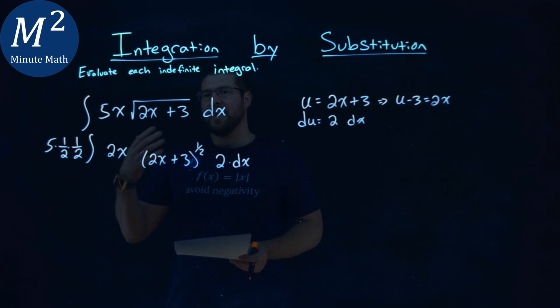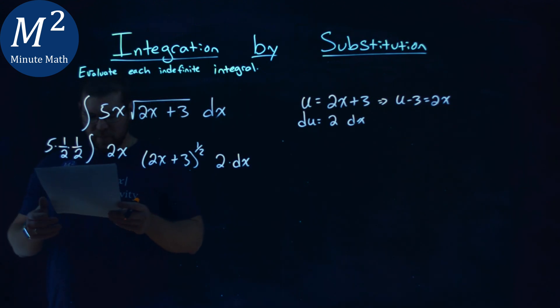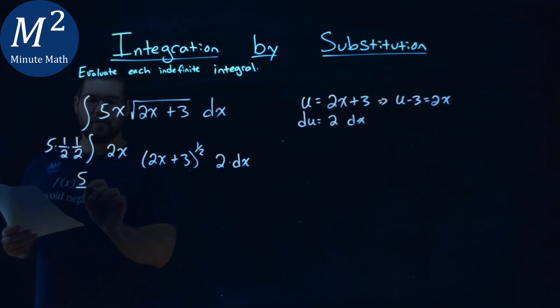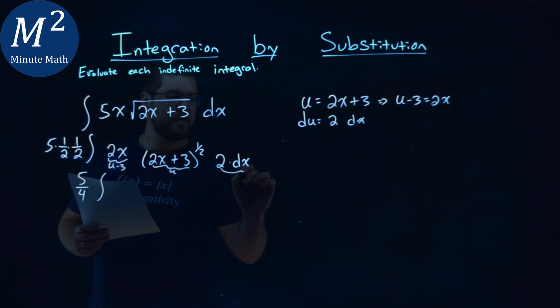So at this point now, let's do our u substitution. Now, 5 times 1 half times 1 half is a 5 fourth. Let's make it a little easy here times the integral. This 2x is that u minus 3. And then this part here is my u, and this is my du.